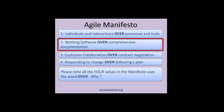Value 2: Working software over comprehensive documentation. Software product development is a creative activity that is difficult to fully envision through the use of static documents. By creating working code that the customer can try, you will get better feedback. Rather than exchanging documents such as test plans and product specifications, an Agile team should build limited capability versions of the product. Customers and business users can try these working models before signing off on them.